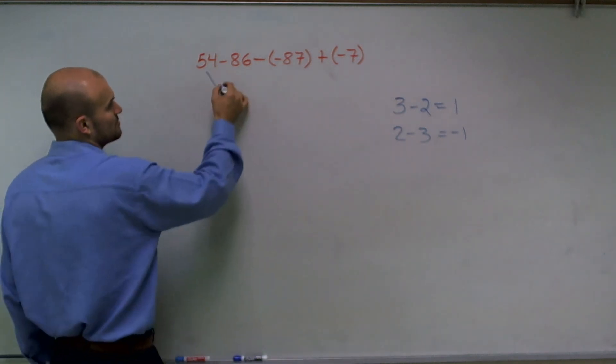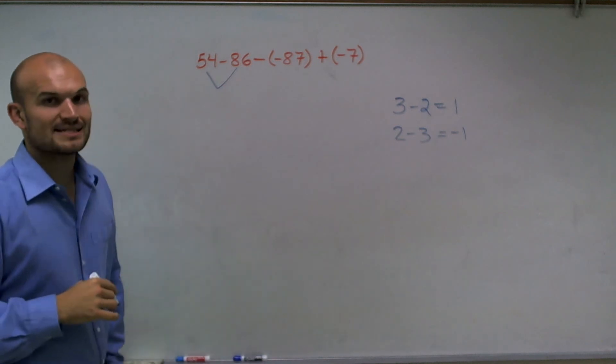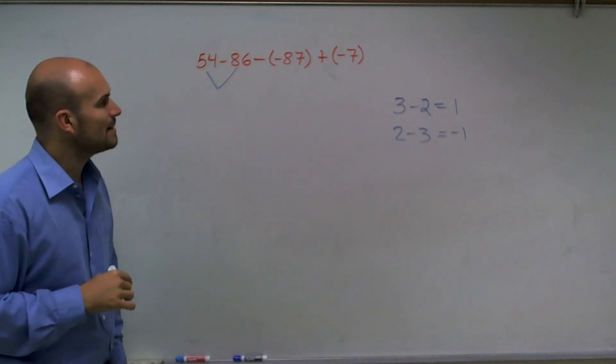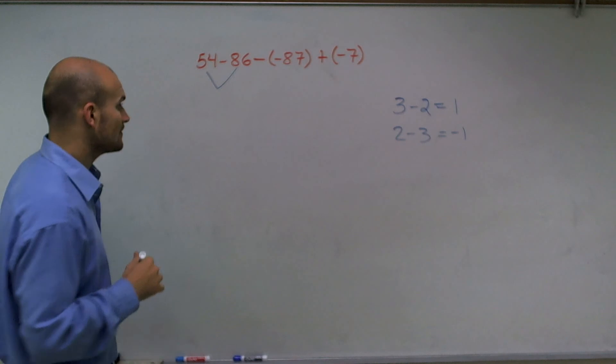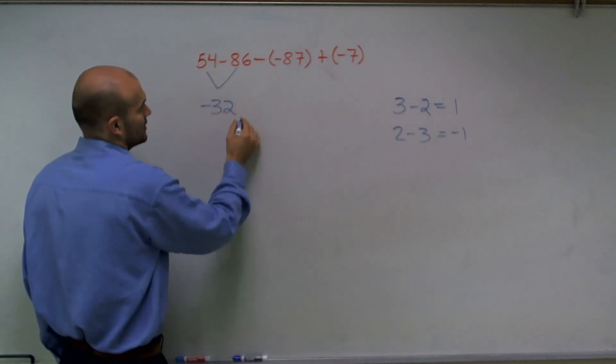So the first two numbers I'm going to subtract are 54 minus 86. And 54 minus 86 is going to give me a negative 32.